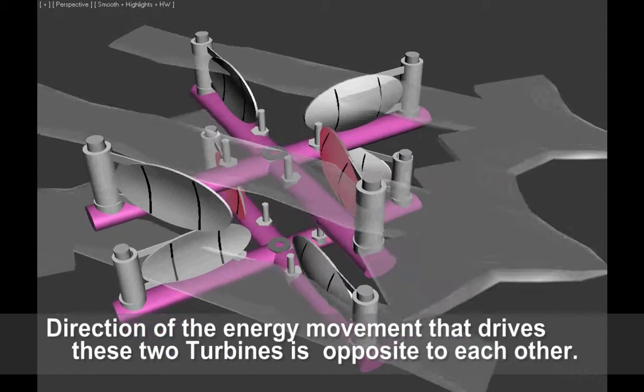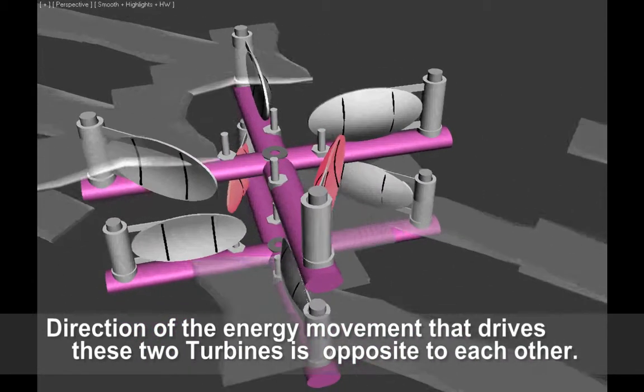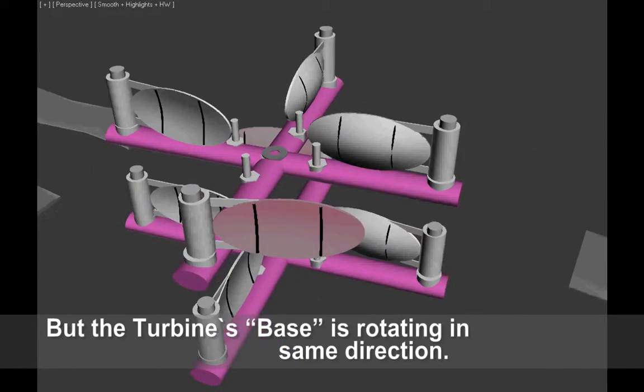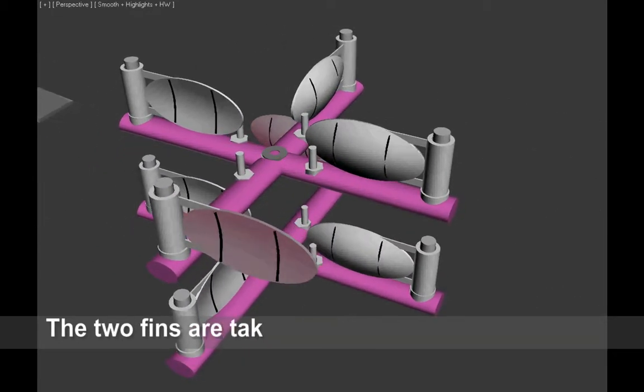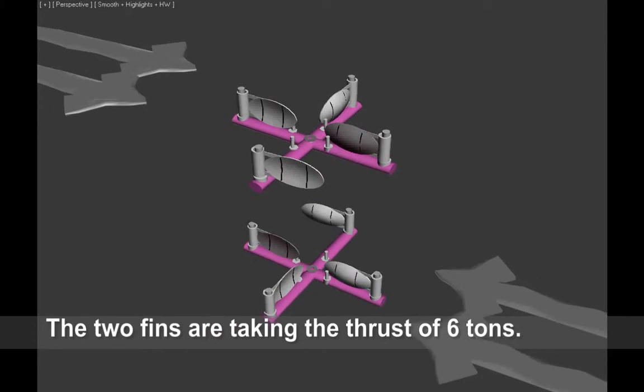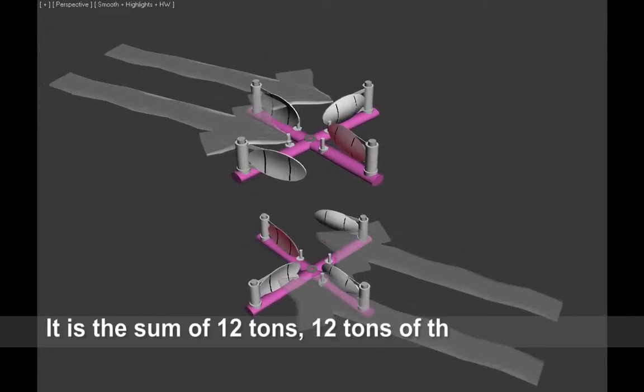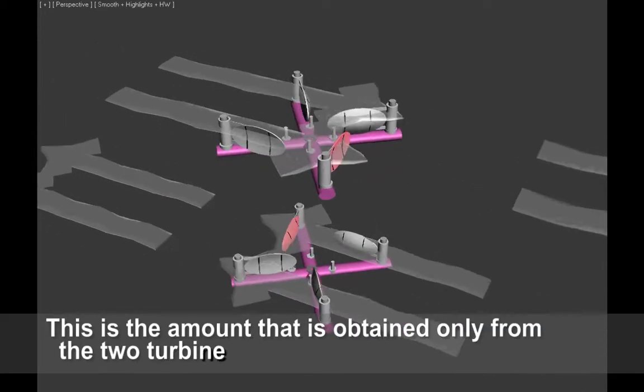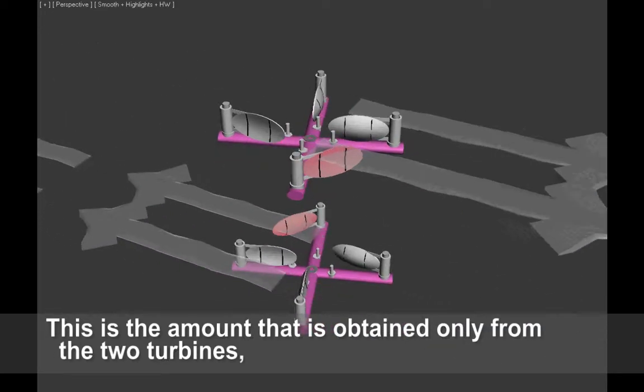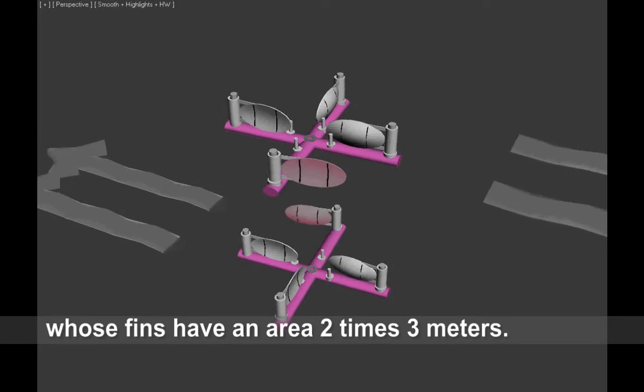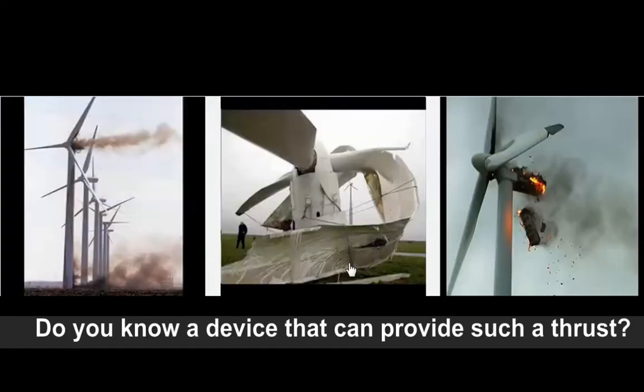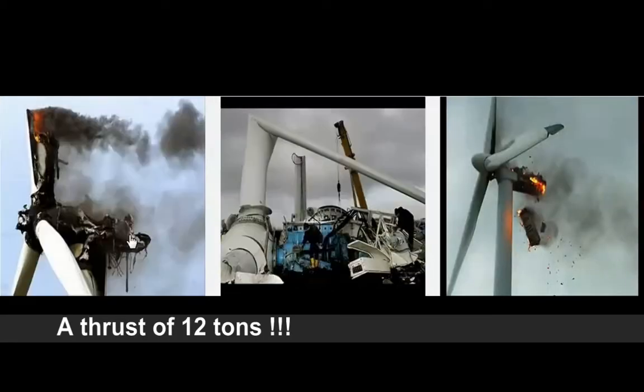Direction of the energy movement that drives these two turbines is opposite to each other, but the turbines base is rotating in same direction. The two fins are taking the thrust of 6 tons. It is the sum of 12 tons, 12 tons of thrust. This is the amount that is obtained only from the two turbines whose fins have an area 2 times 3 meters. Do you know a device that can provide such a thrust? A thrust of 12 tons.